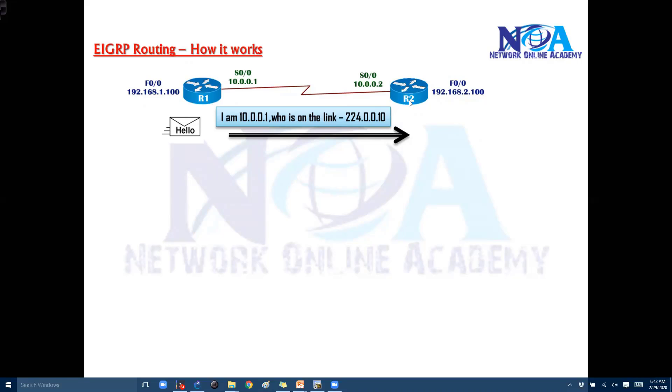Onto router 2. Now if router 2 is not configured with EIGRP then basically these hellos will be unanswered. It's not going to reply back because router 2 is not running EIGRP, so it is not going to understand or reply to those hello messages.